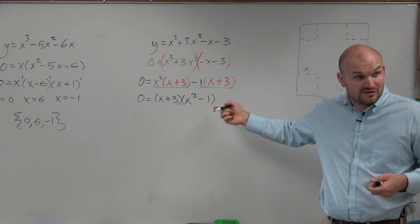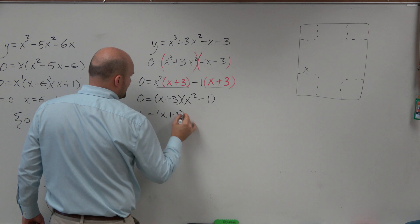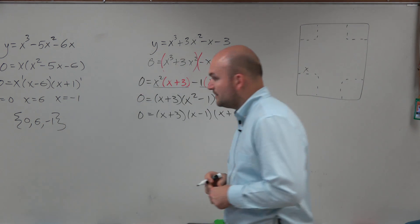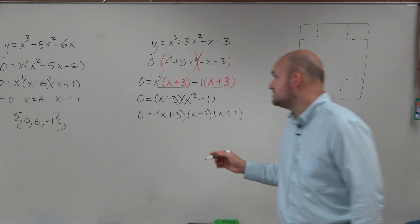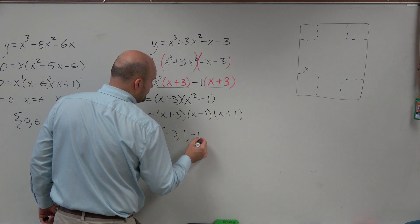So then again, though, we need to factor this down, right? So we'd get 0 equals x plus 3 times x minus 1 times x plus 1. Therefore, now we can see that the solution set is negative 3, positive 1, and negative 1.